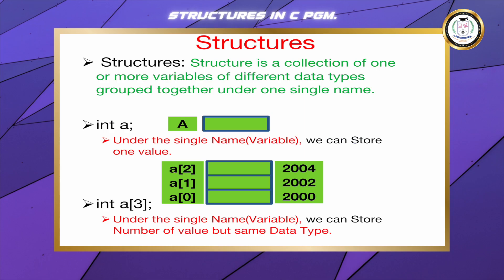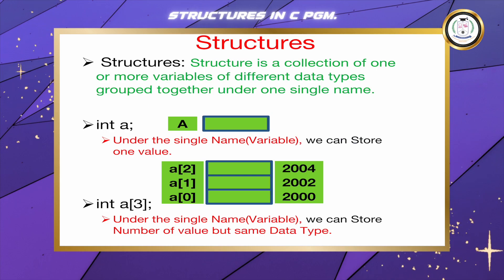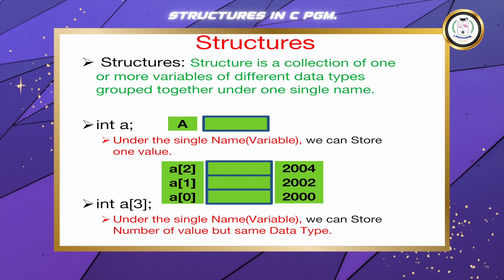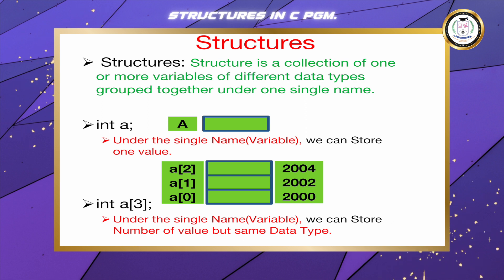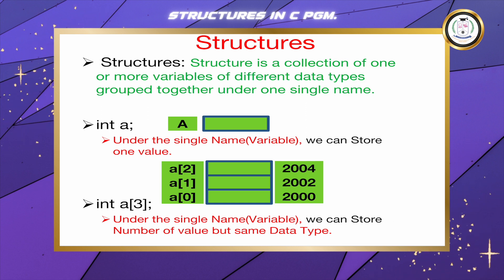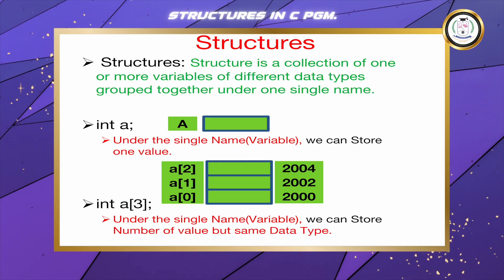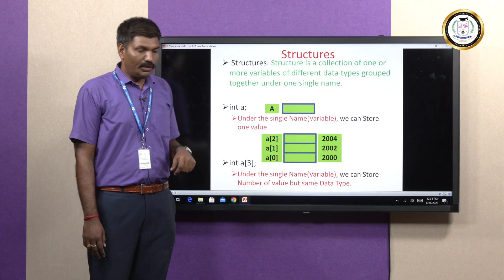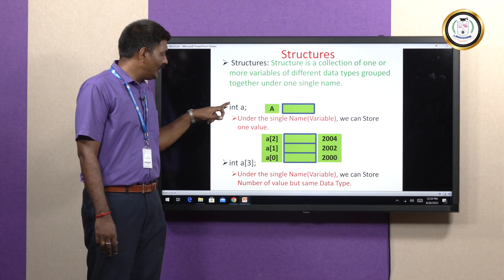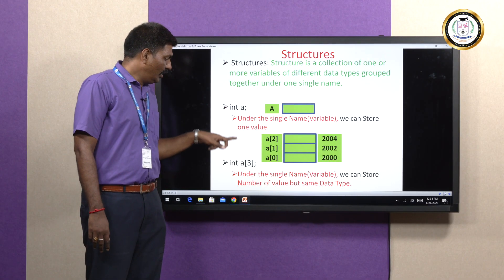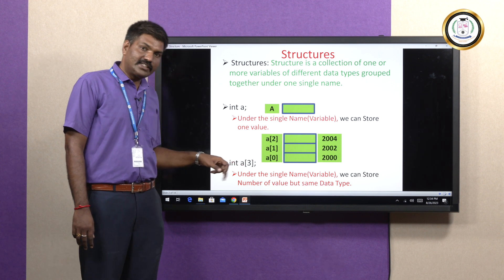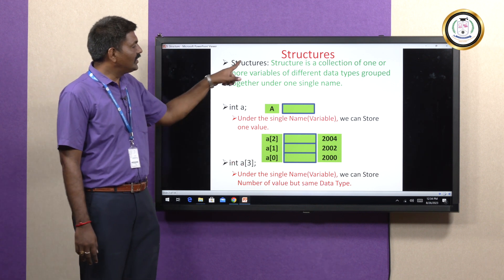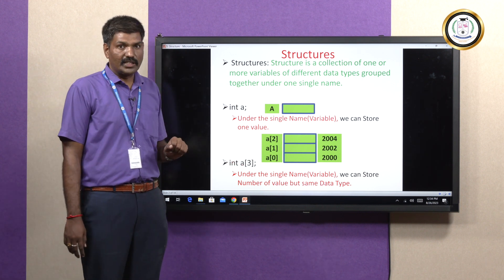Structure definition: a structure is a collection of one or more variables of different data types grouped under a single name. To understand the structure, you need to first understand variables, then arrays, and then you can easily understand the structure.